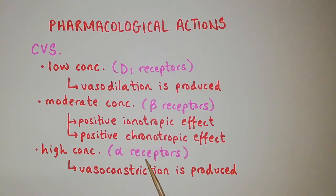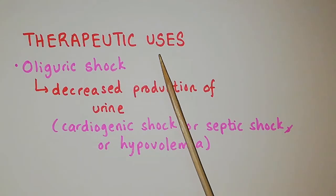And in high concentration when alpha receptors are stimulated, vasoconstriction is produced. Coming to its therapeutic uses, in oliguric shock, the decreased production of urine either due to cardiogenic shock, septic shock or hypovolemia is countered with dopamine.